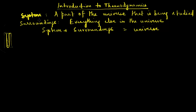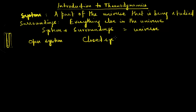A system in thermodynamics can be of three types: you can have either an open system, a closed system, or an isolated system.